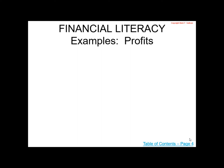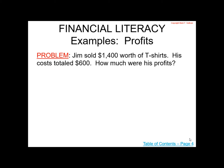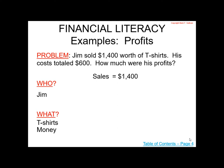Before we begin, let's take a quick look and remember what profits are. Okay, profits. The problem: Jim sold $1,400 worth of t-shirts. His cost totaled $600. How much were his profits? Who was involved? Jim. What was involved? T-shirts and money. The first fact is that Jim sold $1,400 worth of t-shirts — that equals his sales.